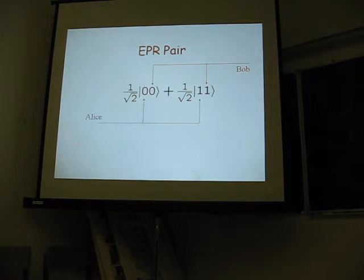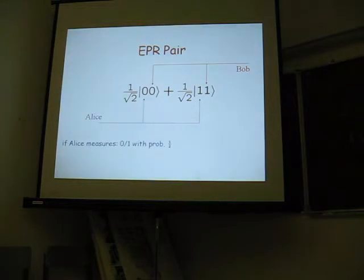Look, if you have this state, and then notice that Alice contains this first qubit, this first register, and Bob contains the second one. And now, if we apply the axioms of quantum mechanics and we measure this, then Alice will measure with probability a half, a 0, or a 1. And Bob also, if he measures with probability 0 or 1, he will measure that.